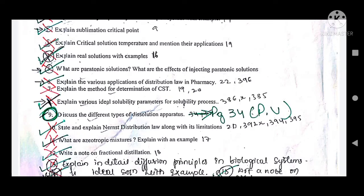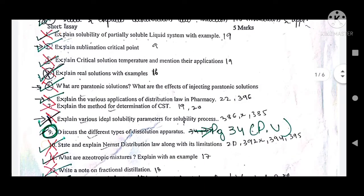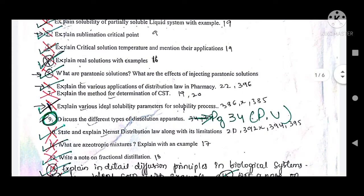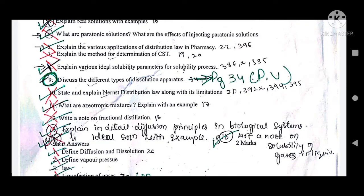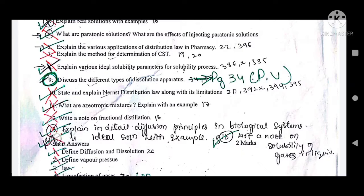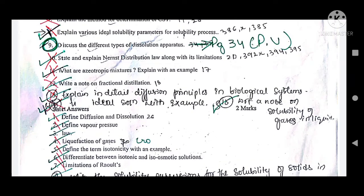The sixth short essay is the method of determination of critical solution temperature (CST). The seventh is: explain various ideal solubility parameters for the solubility process. The eighth is: discuss the different types of dissolution apparatus. The ninth is: state and explain Nernst's distribution law along with its limitations — this was also asked in previous exams. The tenth is: what are azeotropic mixtures? Explain with an example.